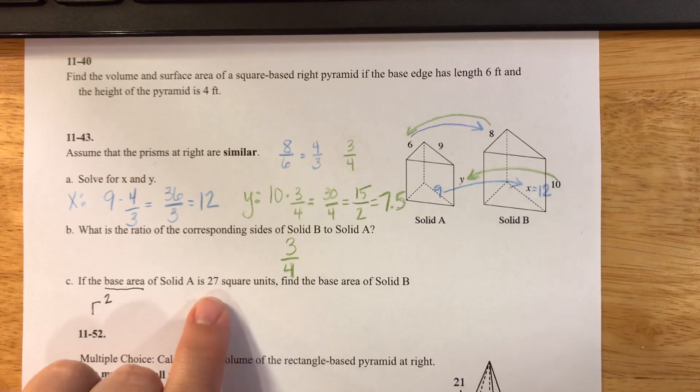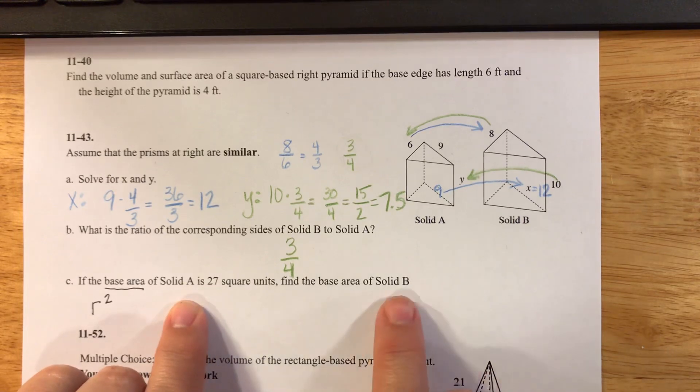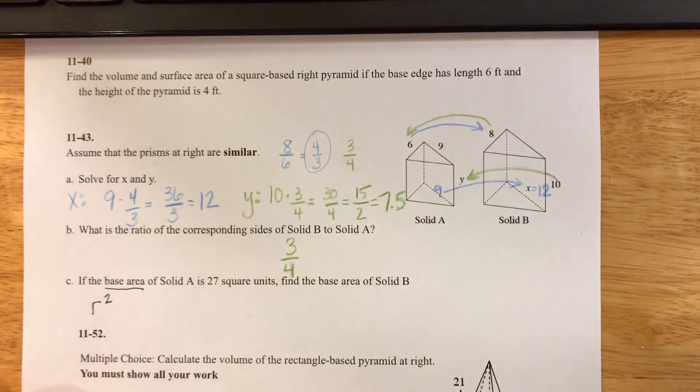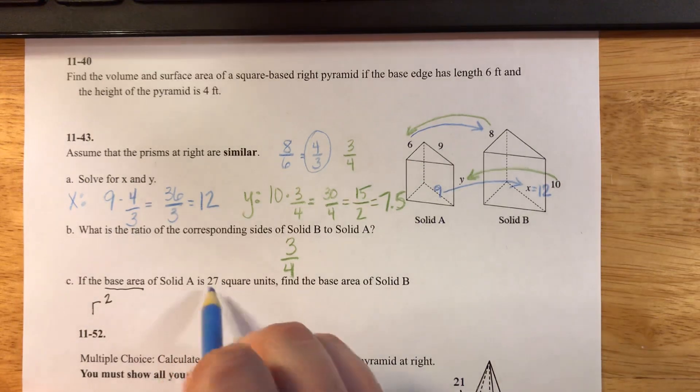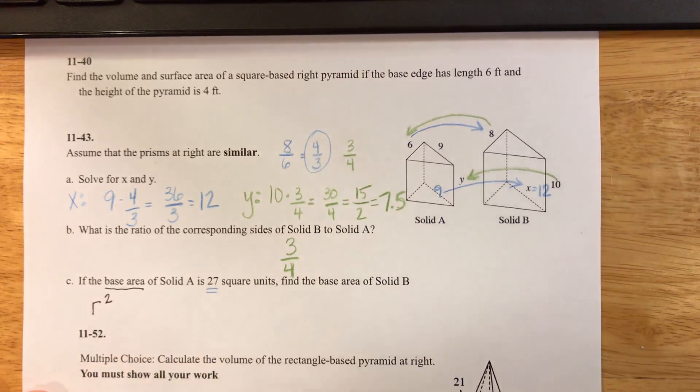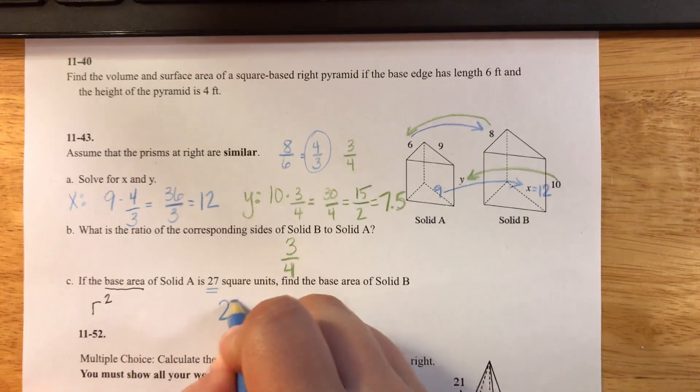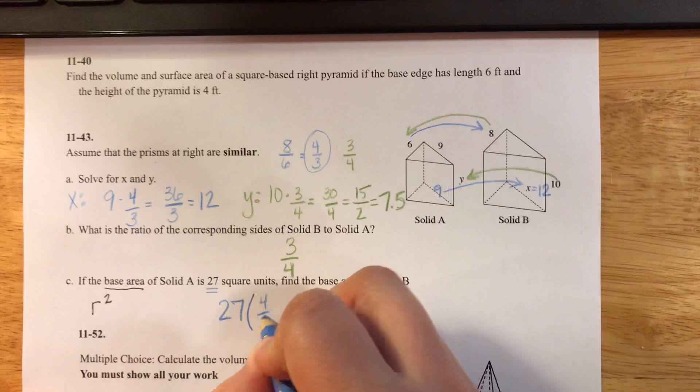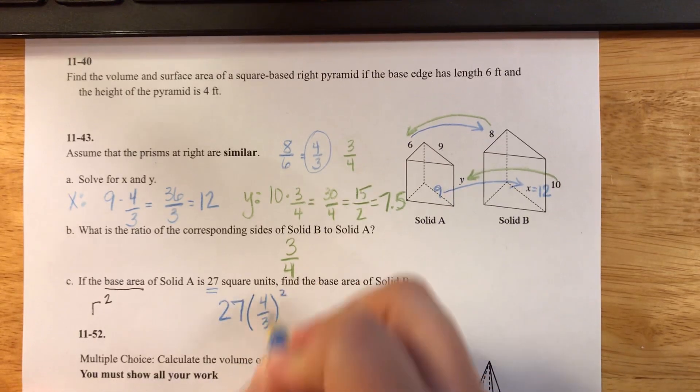I am going from A, the smaller one, to B, the bigger one. So that means that I am going to be using 4 thirds as my zoom factor since I'm going smaller to bigger. I can just take the area of the smaller one, 27, and I can multiply that by 4 thirds squared.